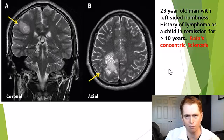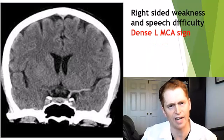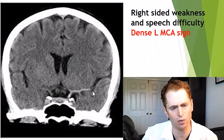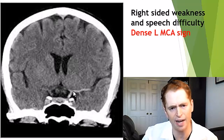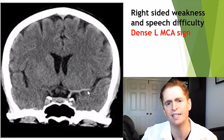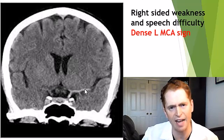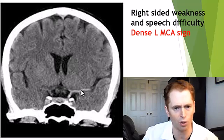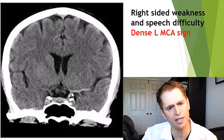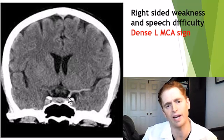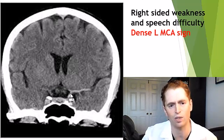This CAT scan done for right-sided weakness and speech difficulty shows high attenuation in the area of the left middle cerebral artery — the dense left MCA sign — representing clot from an acute stroke blocking the X-rays. You can also see the terminal internal carotid artery appears dense: a dense ICA sign, meaning there is also a clot in the terminal internal carotid artery.